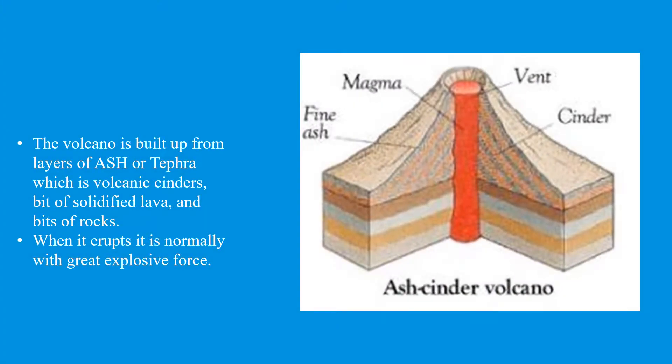An ash cinder volcano is built up from layers of ash or tephra, which is volcanic cinders built up of solidified lava and bits of rocks. When it erupts, it does so with great explosive force.